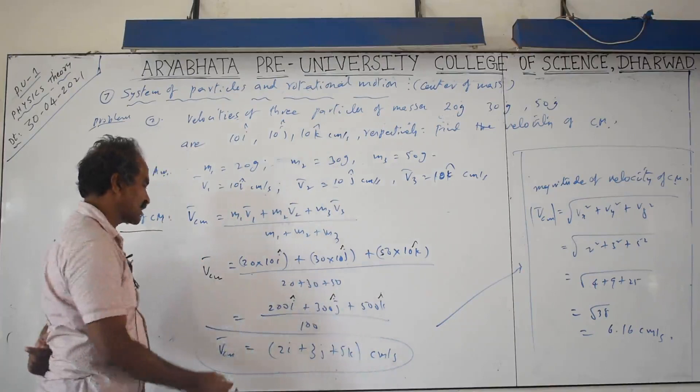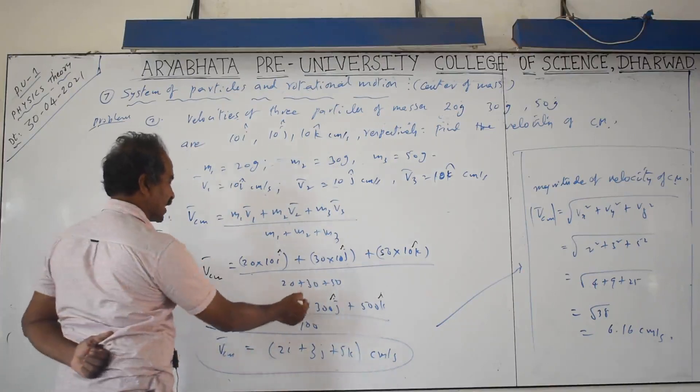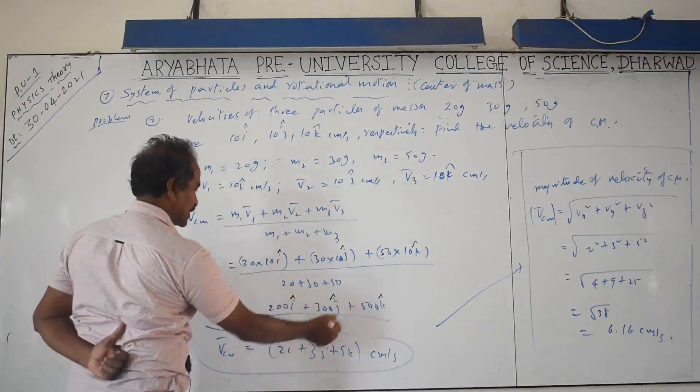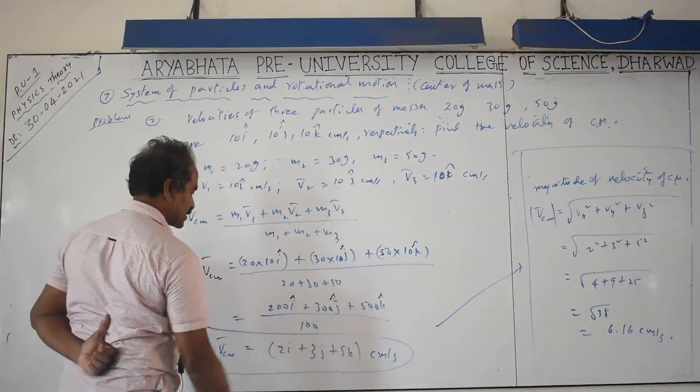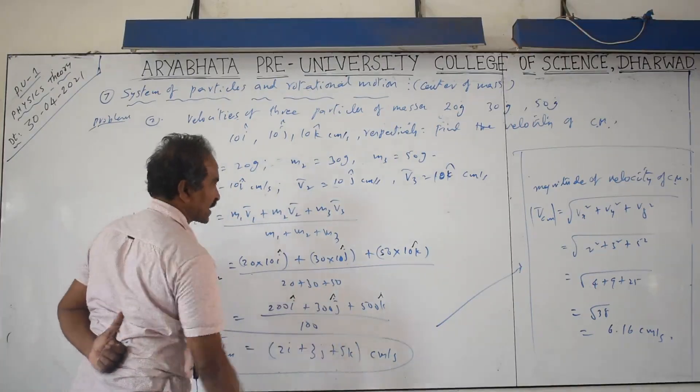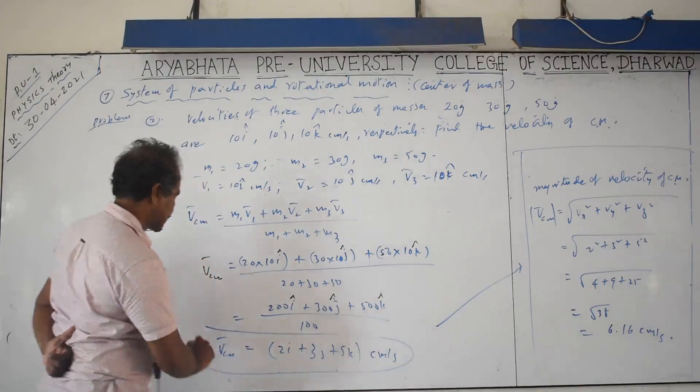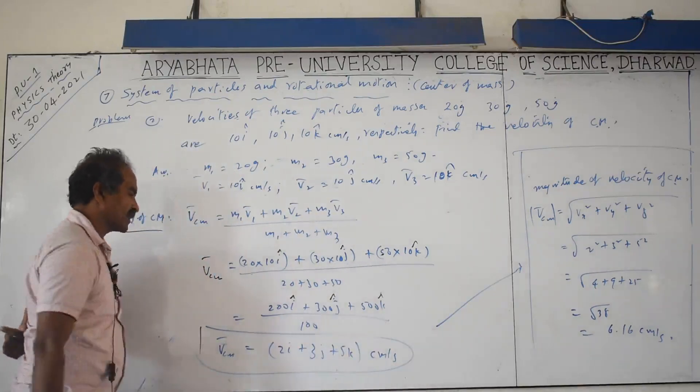After dividing by 100, the result is 2i + 3j + 5k centimeters per second. This is the velocity of center of mass in vector form.